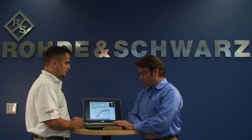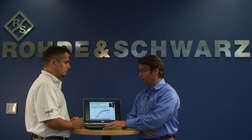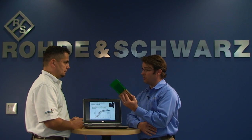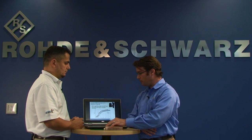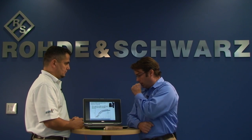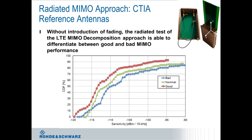Our approach ideally should be able to differentiate good from bad antenna performance. What we see here is a CDF plot — a cumulative distribution function as a function of sensitivity or downlink power level. I'm showing three different curves here: bad, nominal, and good for the respective CTI reference antennas, and you can clearly see that there is a wide spread between these curves.